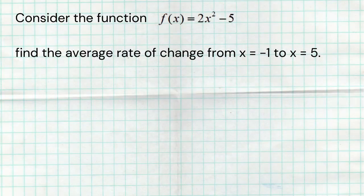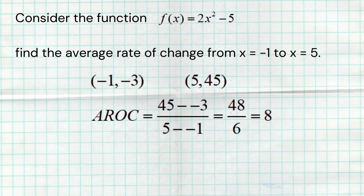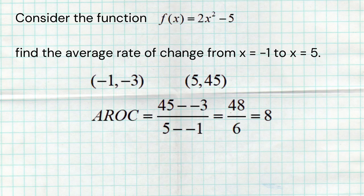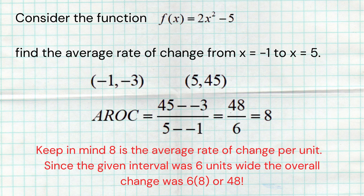Let's look at some examples. For the function 2x² - 5, we want the average rate of change from x = -1 to x = 5. Plug in -1 to get -3, plug in 5 to get 45. Then the average rate of change is (45 - (-3)) / (5 - (-1)) = 48 / 6 = 8. Make sure you do the math carefully — most mistakes come from simple arithmetic errors.